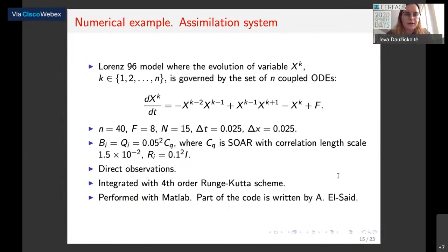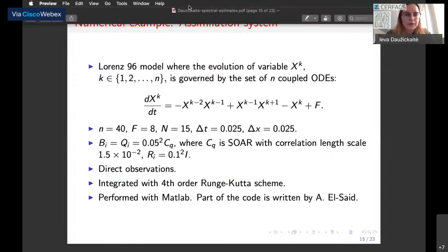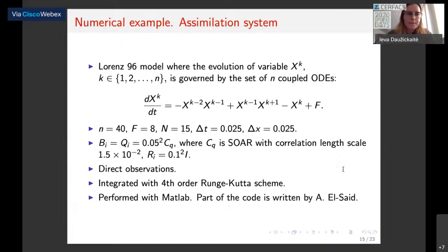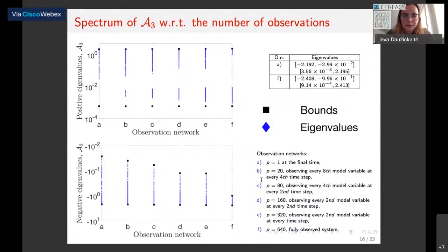Now we look at the numerical example. We use the Lorenz 96 model, which is a common choice in data assimilation experiments. We have 40 model variables and consider 15 time points plus the initial one. Our observation error covariance matrix is diagonal, so that our theorems for the two-by-two block system and the symmetric positive definite system hold. We consider six observation networks for every system, starting with just one observation and increasing the number up to case F, which is a fully observed system.